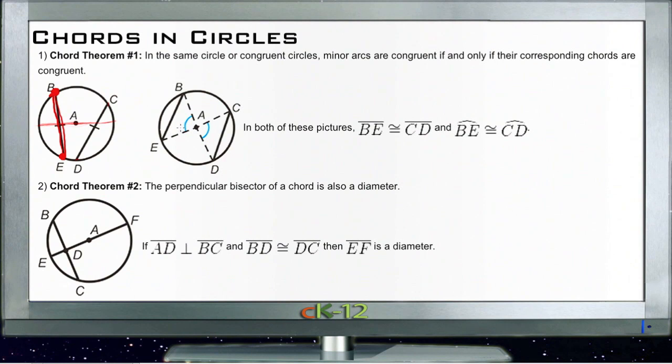the minor arcs that are described by a chord, so if we have chord BE here, of course that also describes the arc BE or EB. The minor arcs on any two circles are congruent if their corresponding chords are congruent.